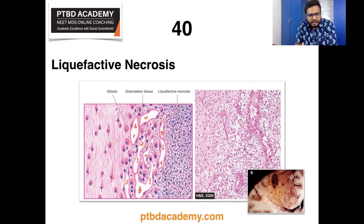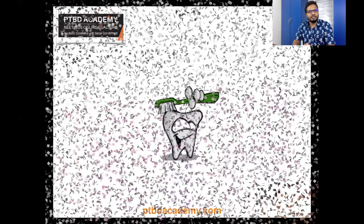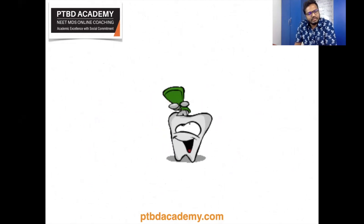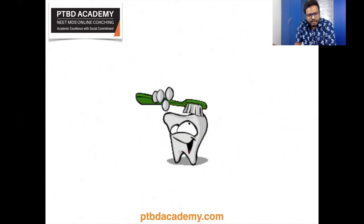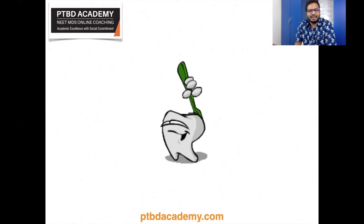On screen you can see liquefactive necrosis in the brain: the necrosed area on the right side of the field shows a cystic space containing cell debris, while the surrounding zone shows granulation tissue and gliosis. These are the topics highlighted in this video. As more keywords come in, we'll provide additional questions and clarifications. Drop a comment for further queries and we'll update the description within 24 to 48 hours. Best wishes and take care.